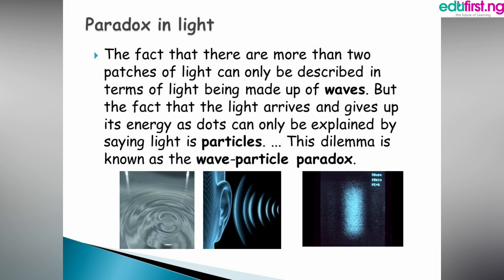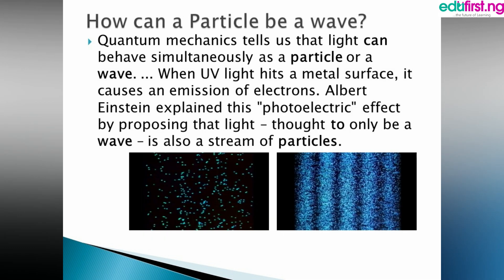In the physics realm, scientists have made us realize we shouldn't keep asking whether light is one or the other, as that question is somewhat meaningless. Quantum physics helps us understand that light can behave simultaneously as a particle or a wave. When UV light hits a metal surface it causes an emission of electrons — the negative charges in atoms. Albert Einstein explained this photoelectric effect by proposing that light, previously thought to be only a wave, is also a particle.